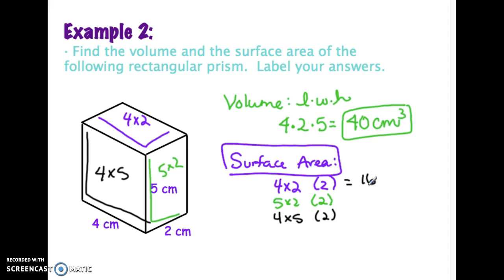Four times two is eight times two is sixteen. Here, five times two is ten times two is twenty. Four times five is twenty times two is forty. When I add these all up, I'm going to get seventy-six, and I'll label that square centimeters. I might give you some extensions, but remember that volume is what's inside and surface area is on the outside.